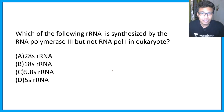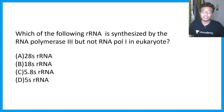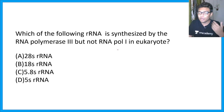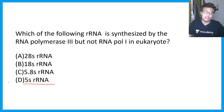Next question: which rRNA is synthesized by RNA polymerase 3 but not by polymerase 1 in eukaryotes? RNA pol1 is responsible for several rRNA transcripts, but only 5S rRNA is not synthesized by pol1 — it is synthesized by pol3, along with tRNA transcripts. So the correct option here is D.